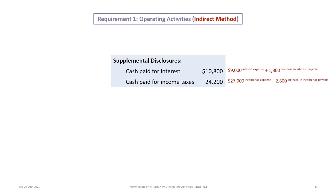Now I'm introducing one important piece we'll see later. Under the indirect approach, we must include a supplemental disclosure for two things: cash paid for interest and cash paid for income taxes. This is a requirement under both IFRS and ASPE. Cash paid for interest is not the same as interest expense. To find it, we look at the income statement — $9,000 in interest expense — and then adjust for the change in interest payable.